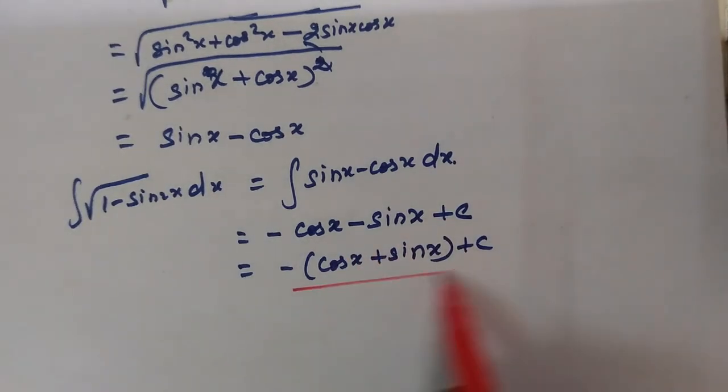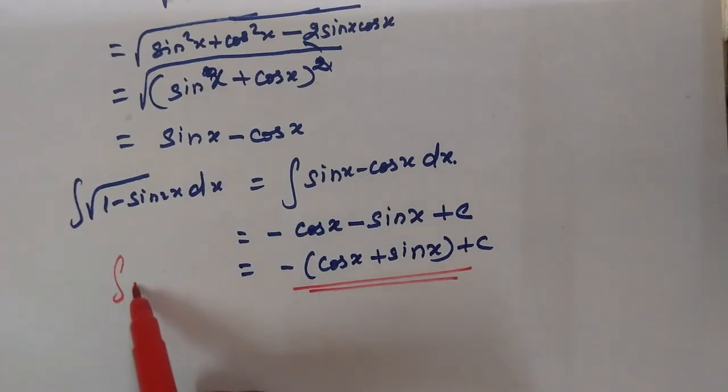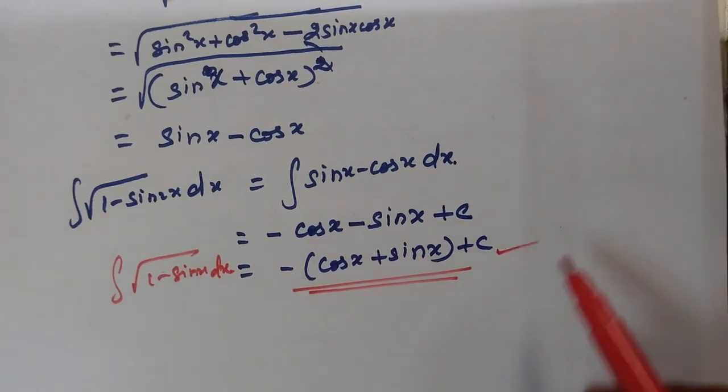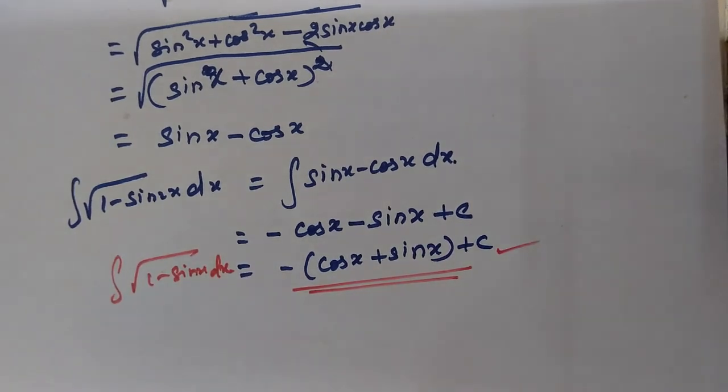So this is the answer. The integral of root of 1 minus sin x dx equals minus the quantity cos x plus sin x, plus c.